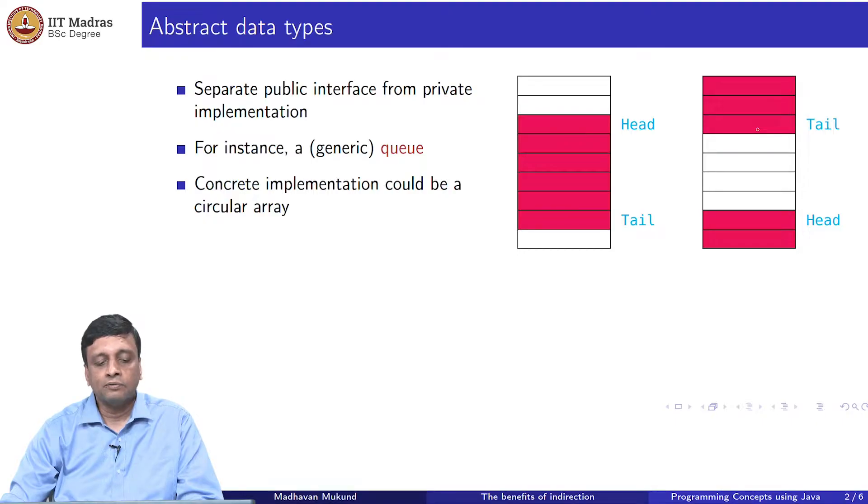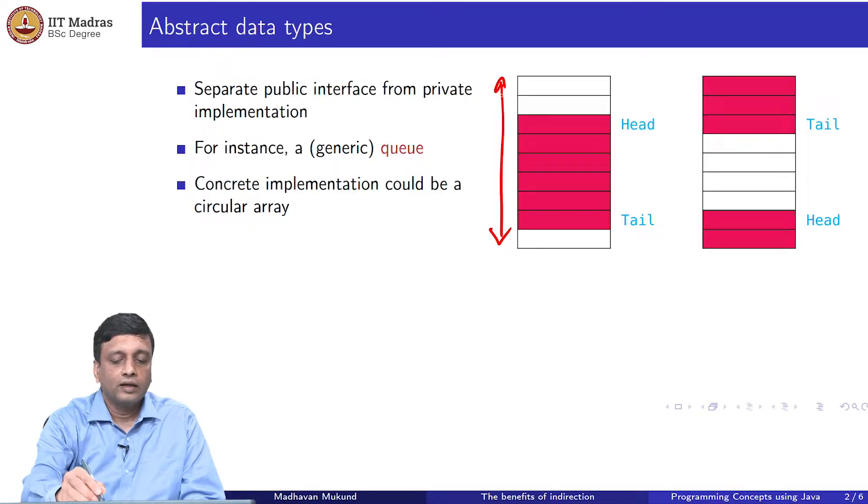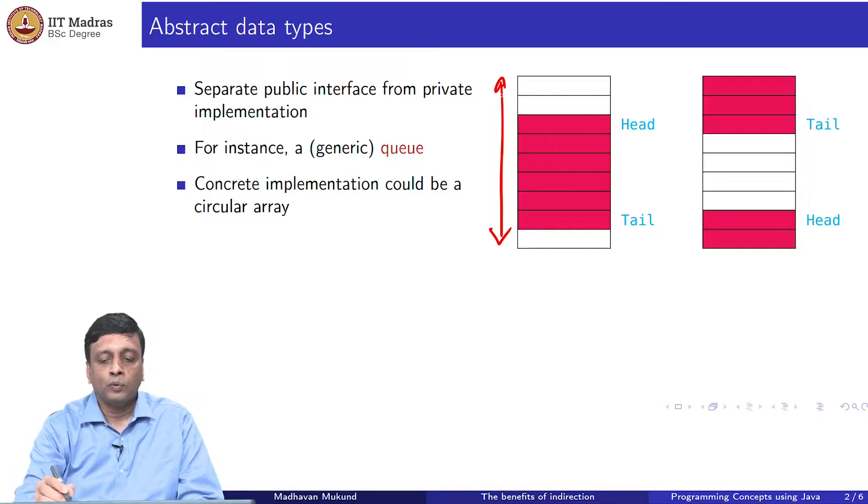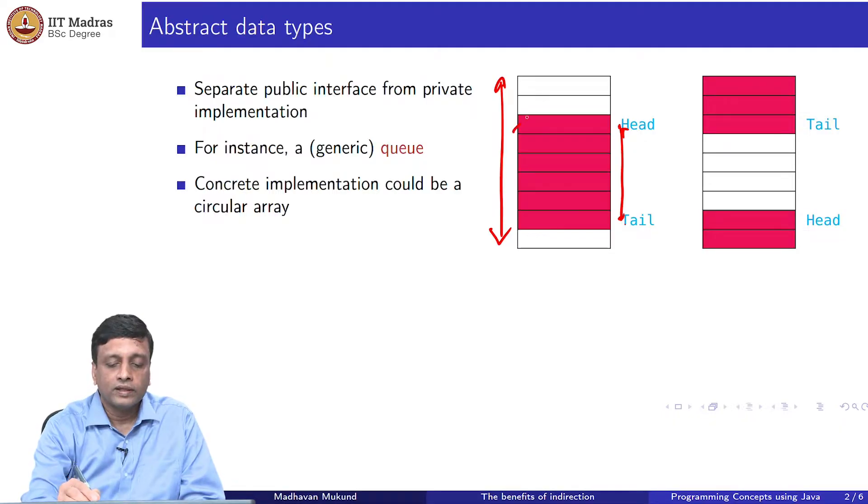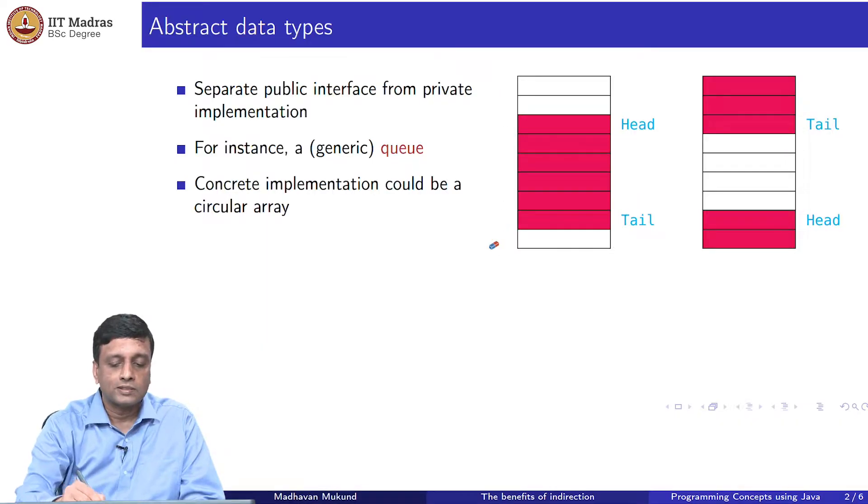Here is something which is called a circular array. In a circular array, we have as you can see an array, an array is just a block of storage. We designate where the queue starts and where the queue ends. Here the queue starts at this point and it ends at this point. The queue is actually between these two. The idea is that if I remove an element from the queue, then this element will be deleted and the head will move down by one. If I add an element to the queue, then this element will get populated and I will move the tail down by one. That is how the circular array works under normal circumstances.